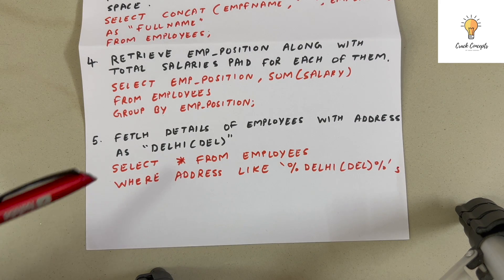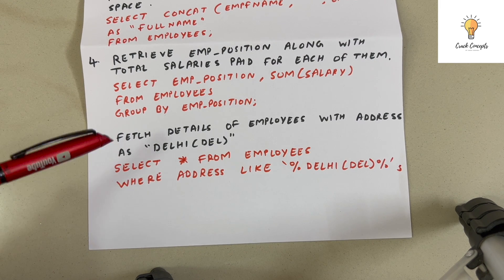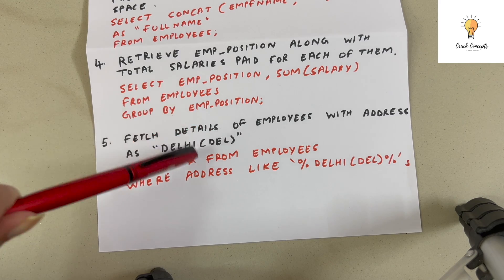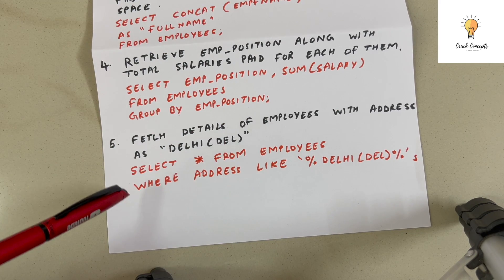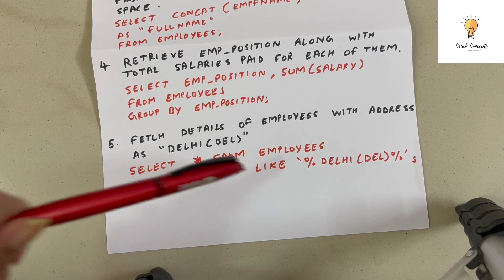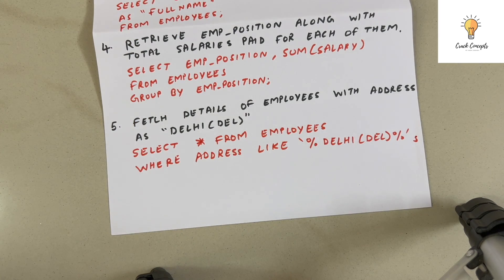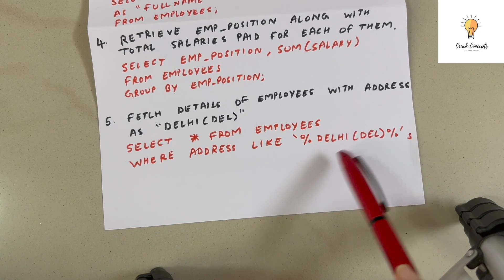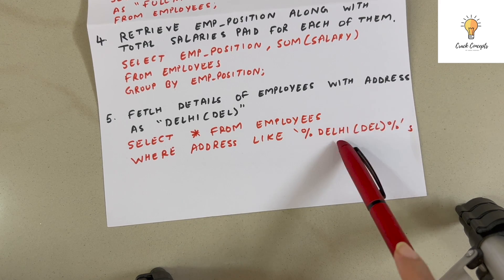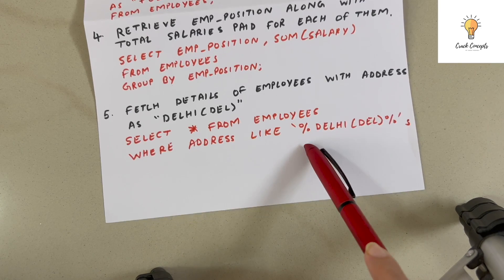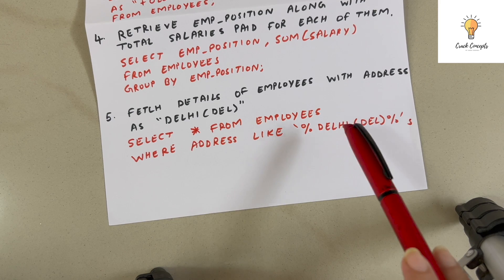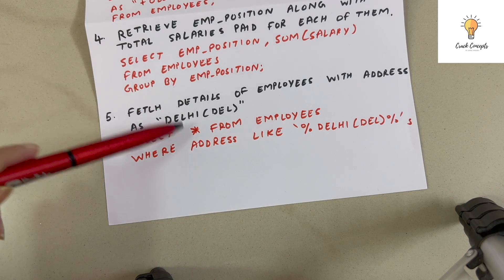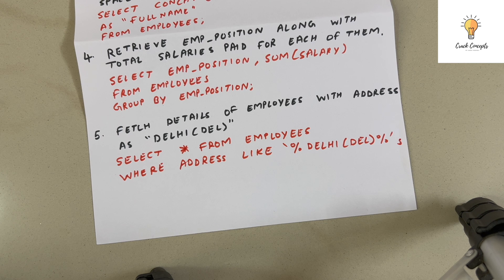The fifth query: fetch details of employees with address as 'Delhi'. We need to fetch all employees that have 'Delhi' in the address column, so we use LIKE. SELECT * FROM employees WHERE address LIKE '%Delhi%'. The percentage signs mean anything can appear before or after 'Delhi', since it just needs to contain 'Delhi' somewhere in the address.